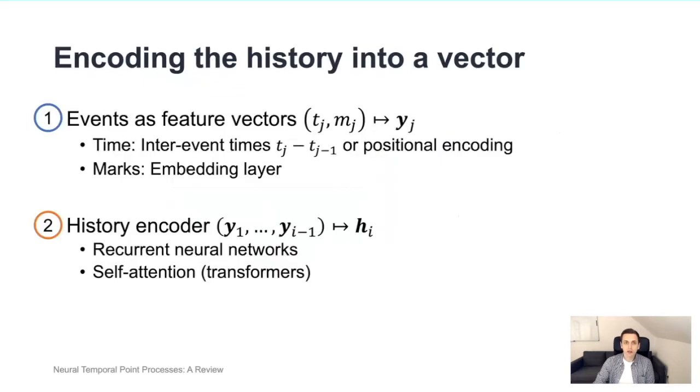The first two parts of this process are mostly based on established techniques in the deep learning literature. For example, to represent the event as a feature vector, we can simply use the inter-event times or we can use positional encodings based on trigonometric functions, similar to how it's done in NLP and machine learning models. For categorical marks, we simply use an embedding layer.